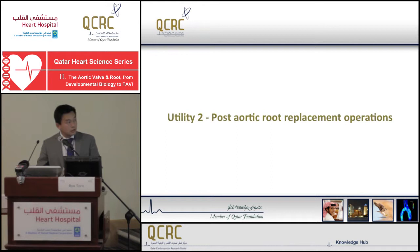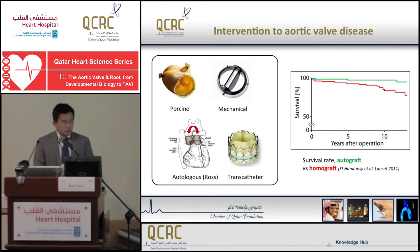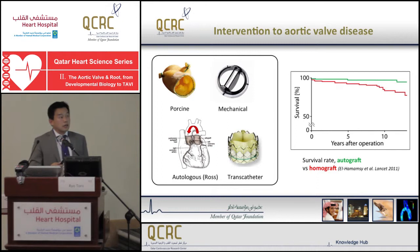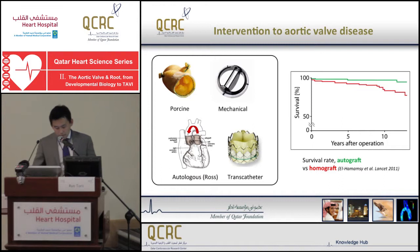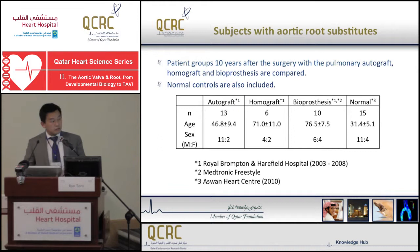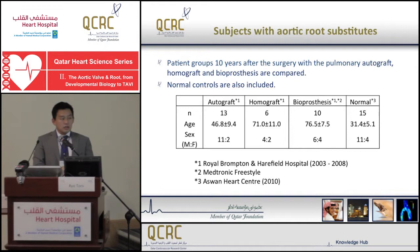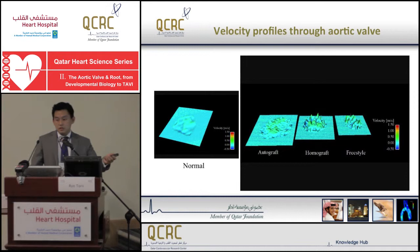I would now like to show what we have done on post-aortic root replacement conditions. The outcome from aortic root replacement depends on the type of valve substitute — for example, this plot shows a comparison between autograft and homograft, which diverges significantly after 10 years. What I did here is compare flow characteristics of different patient groups: one with autograft, one with homograft, and one group with bioprosthesis (a porcine xenograft), along with normal controls.